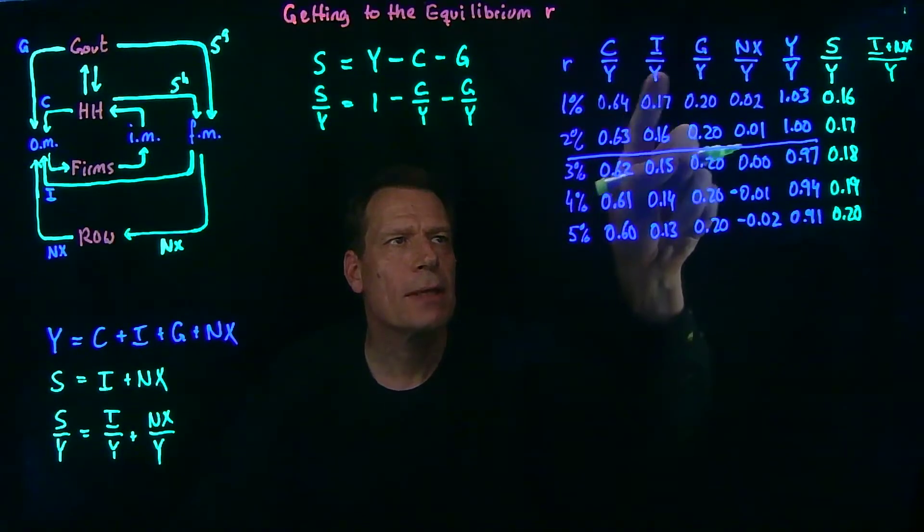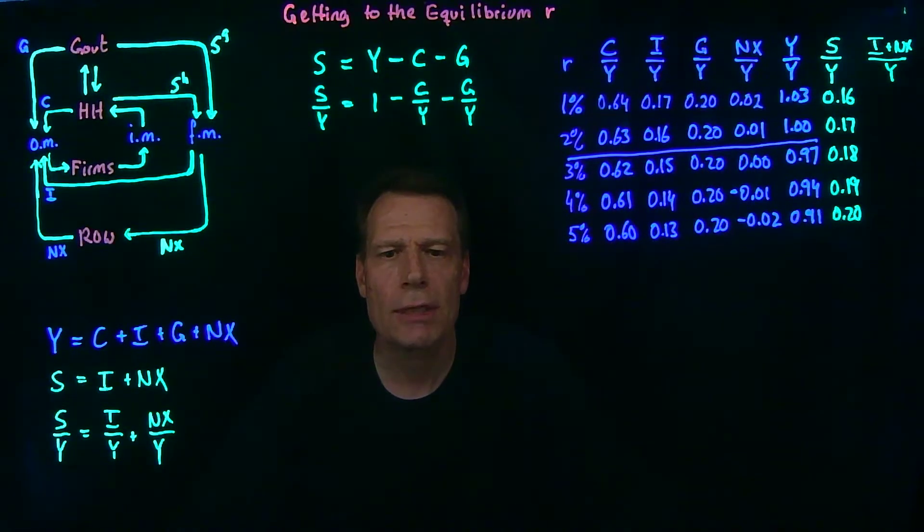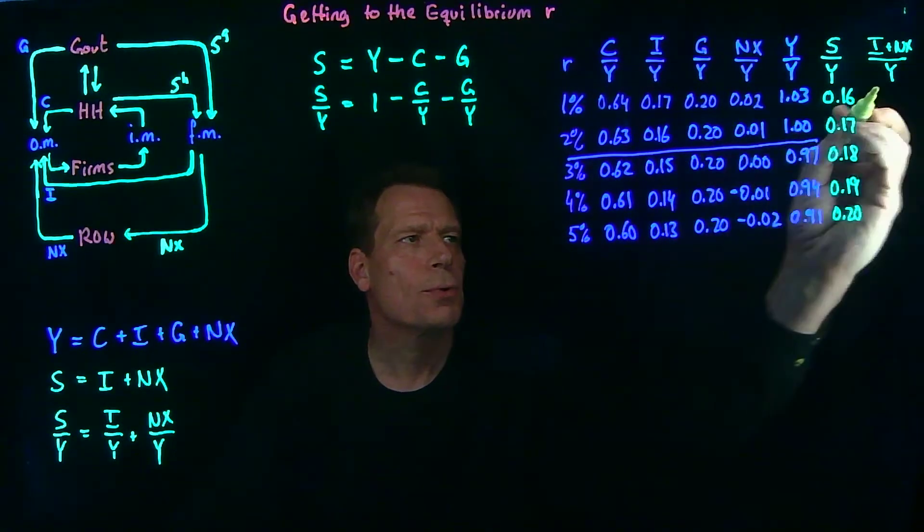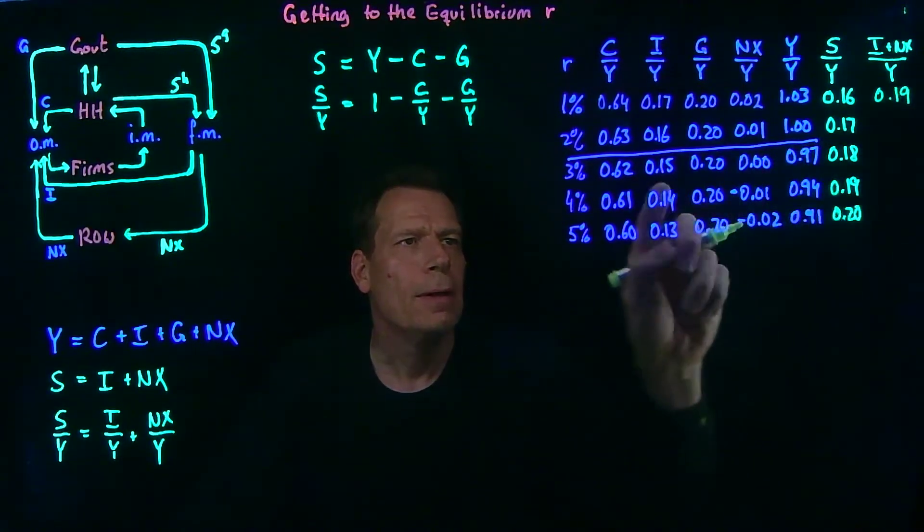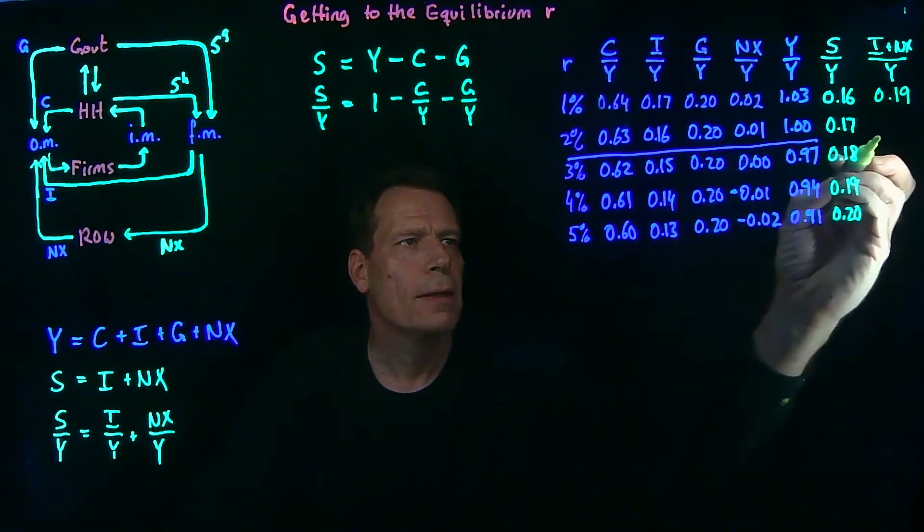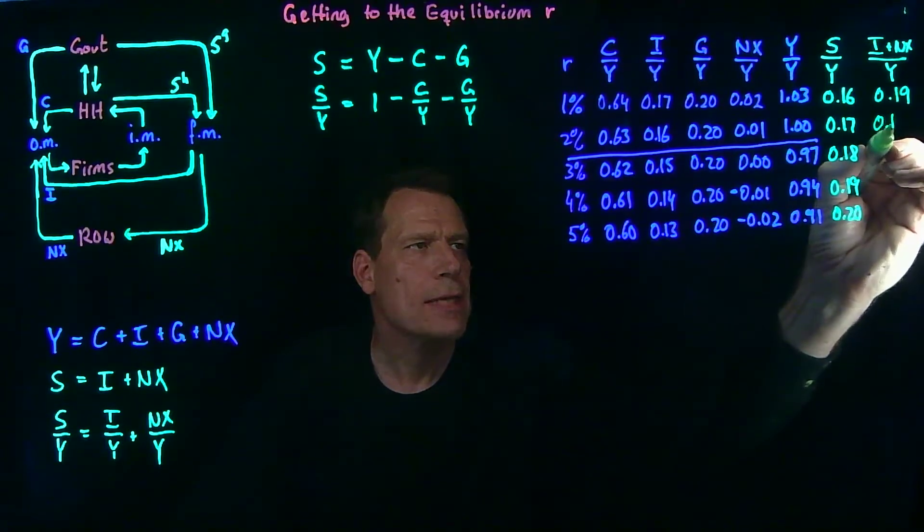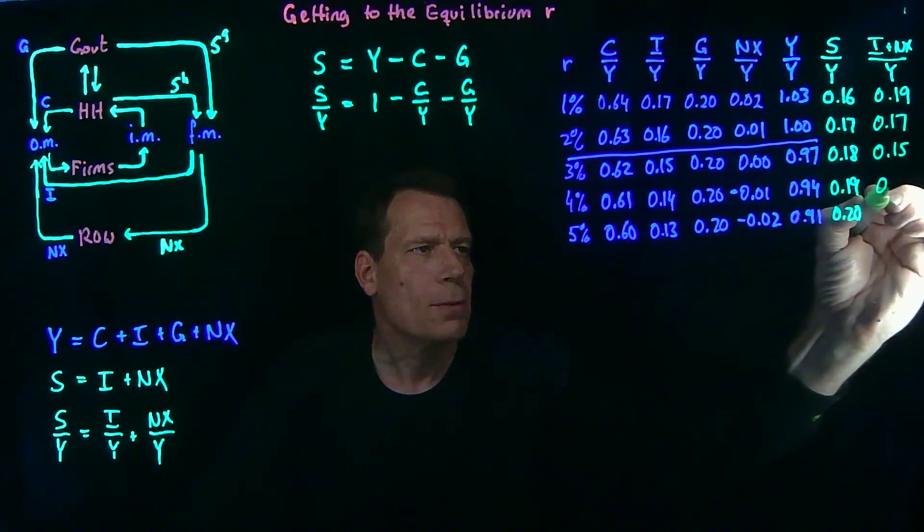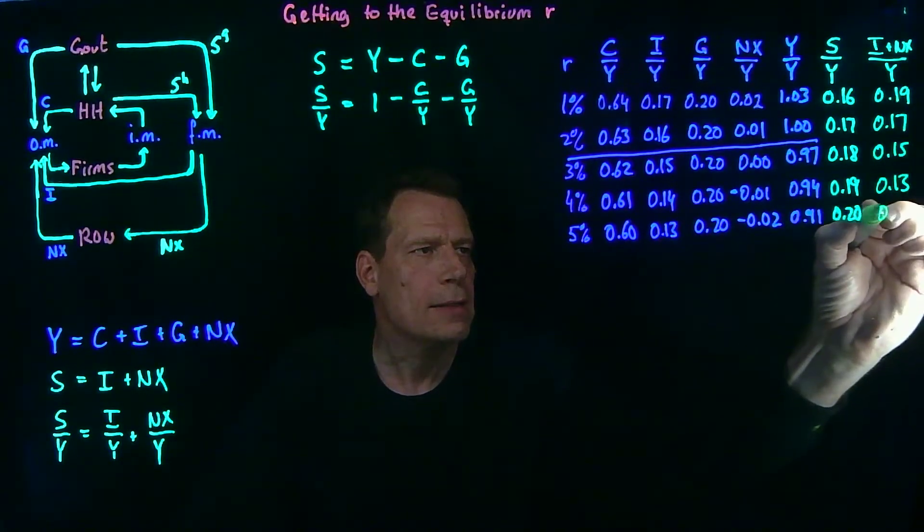Well, we already have investment and net exports as a share of GDP in two separate columns. We just have to add those together. 0.17 plus 0.02 is equal to 0.19. 0.16 plus 0.01 is equal to 0.17, 0.15, 0.13, and 0.11.